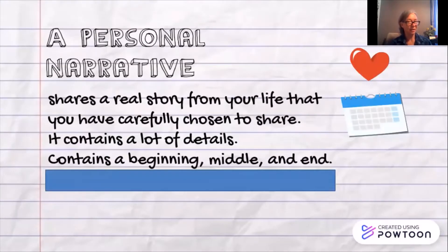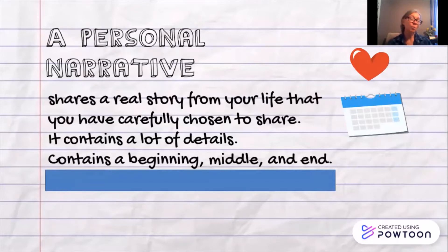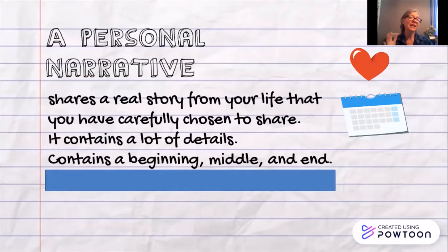A personal narrative shares a real story from your life that you have carefully chosen to share. Because it's a personal narrative, you might want to include a lot of details so that the person or people listening to your story get a really good sense of the reason this story is important to you. Always remember that an effective story likely has a beginning, a middle, and an end. You may even want to tell a story that shows a slight character arc, which means this is what you were like when the story starts, then the story happens, and this is how you are once the story ends.